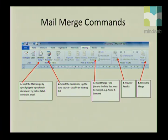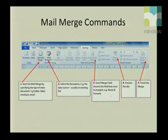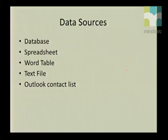The first step is starting your mail merge — deciding what kind of main document you'll have. The second is selecting your recipients, such as a contact list. The third is inserting your merge fields — like names, surnames, and addresses. The fourth is previewing what your letter will look like, and the fifth is finishing the merge. It's quite simple.